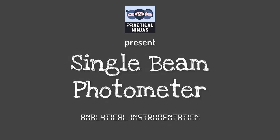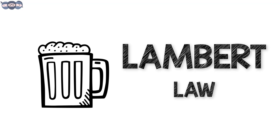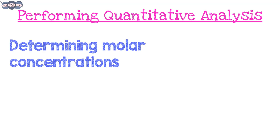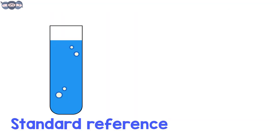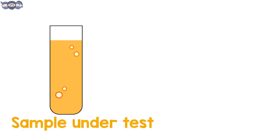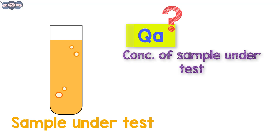Hello viewers, in this video we are going to discuss the single beam photometer. Let's start with the principle. The single beam photometer follows Beer-Lambert's law to determine the concentration of an unknown sample. The absorption of light by a reference sample and an unknown sample is used to obtain the value of unknown.